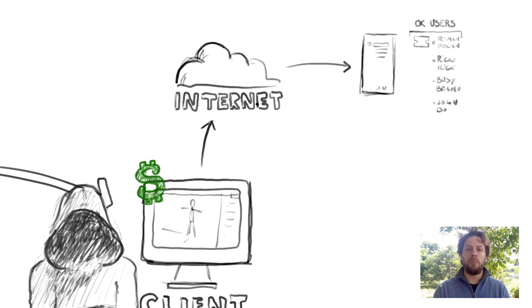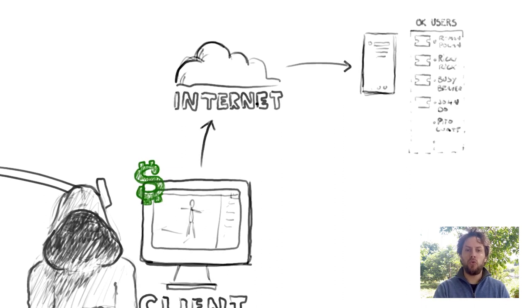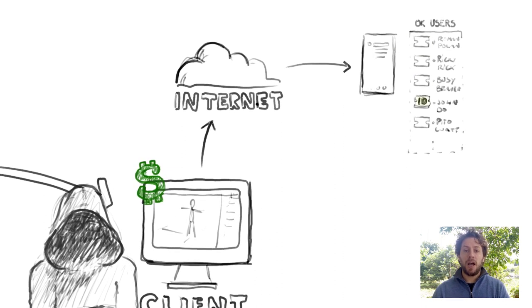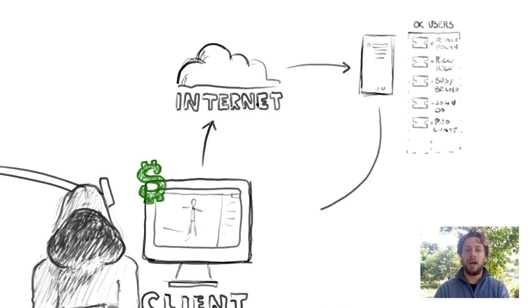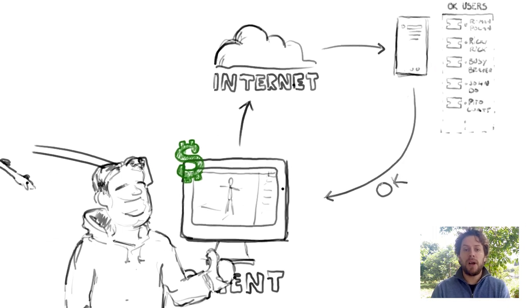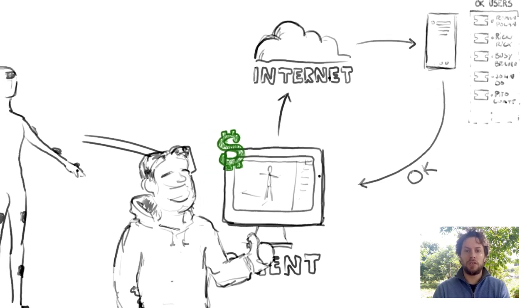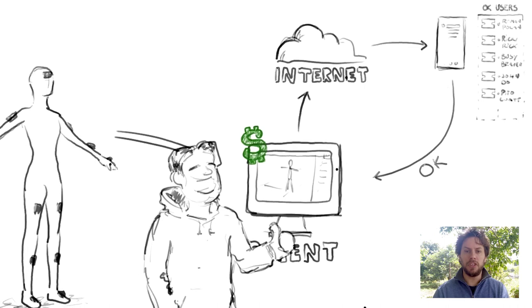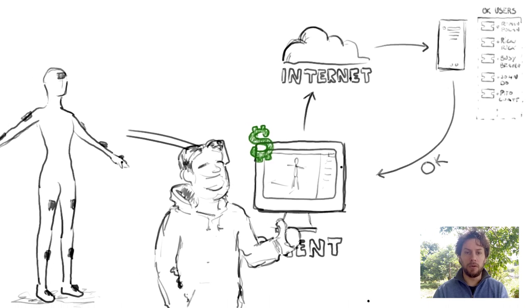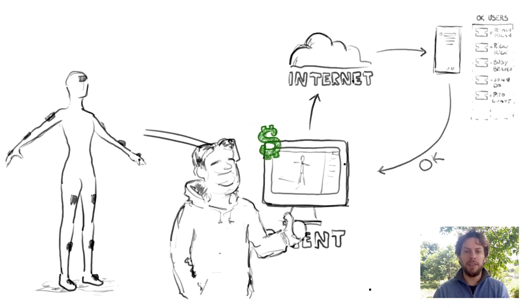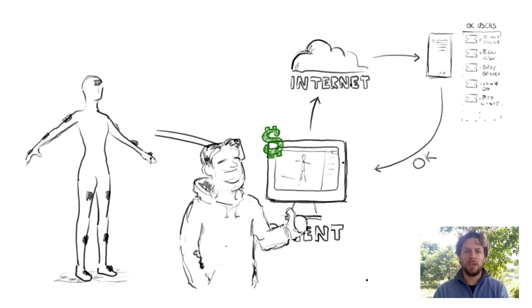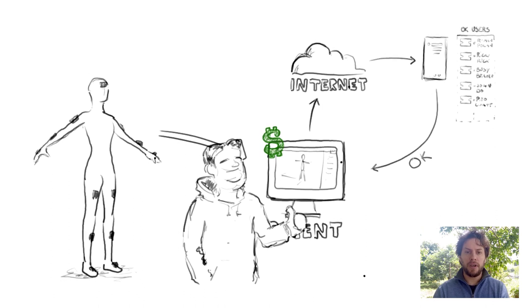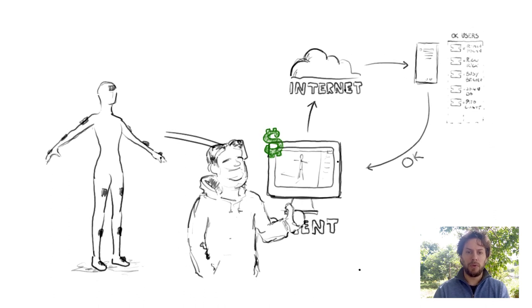The server then compares this token to a list of active users and gives permission back to continue executing the software. This machinery alone is capable of collecting data about who you are, how often and for how long you do mocap. But that's okay — after all, that's how most private software works nowadays.